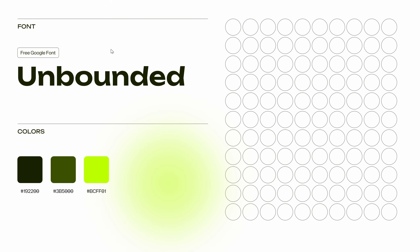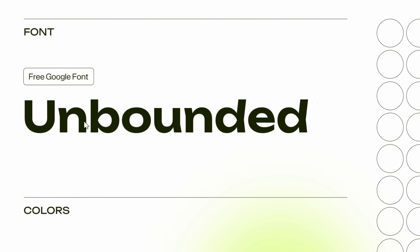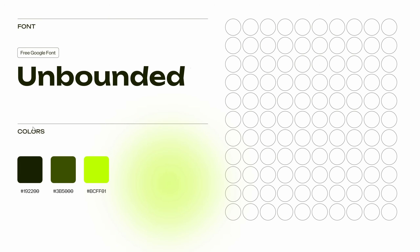First let's quickly go over the style that we'll be using for this slide. We'll be using this awesome font called Unbounded — it's free on Google Fonts, link is in the video description. We'll also use these three nice shades of green and you can see their hex codes right here. I'll show you how to make the soft fuzzy green circle and how to design all of these perfectly aligned circles.